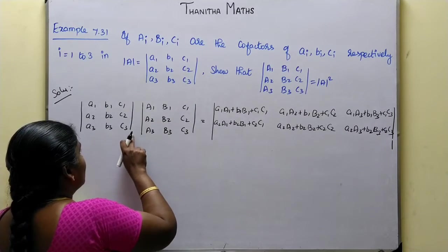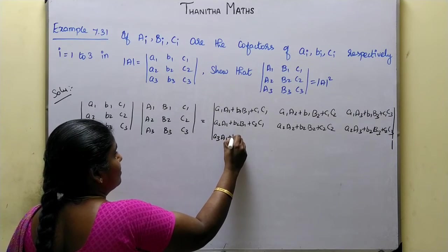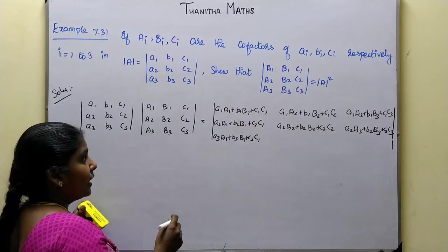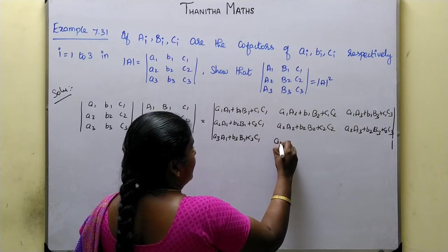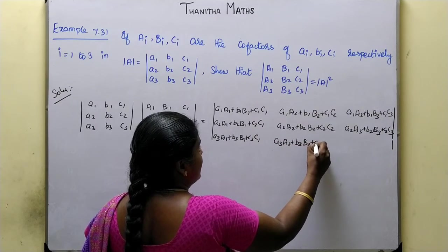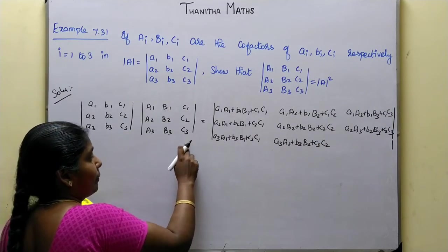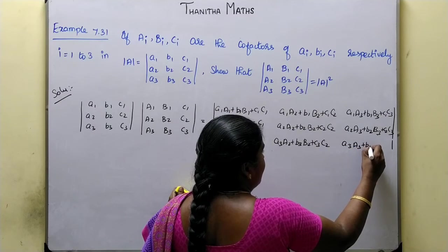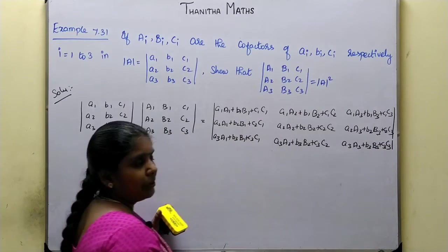Third row by first row: a3·A1 + b3·B1 + c3·C1. Next, third row by second row: a3·A2 + b3·B2 + c3·C2. Third row by third row: a3·A3 + b3·B3 + c3·C3. Okay.